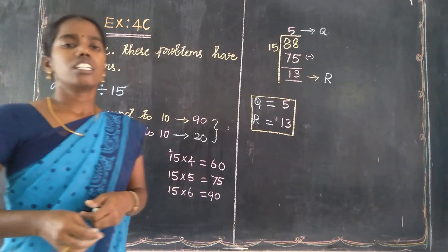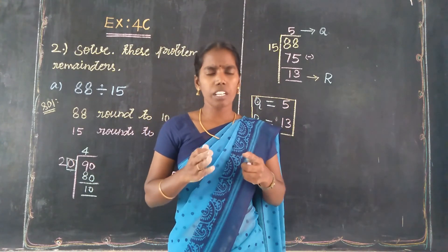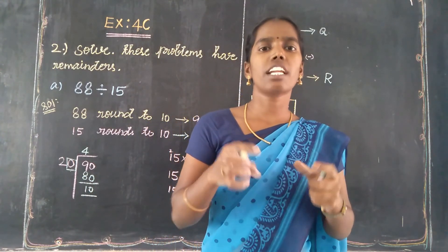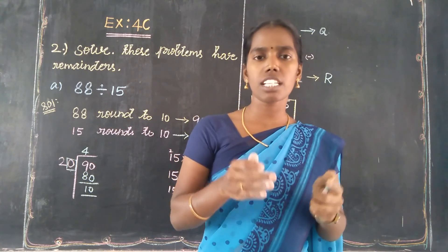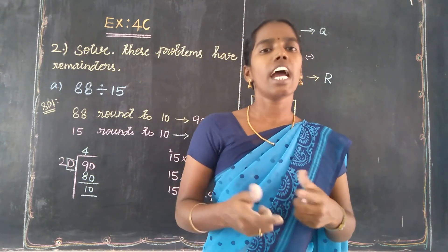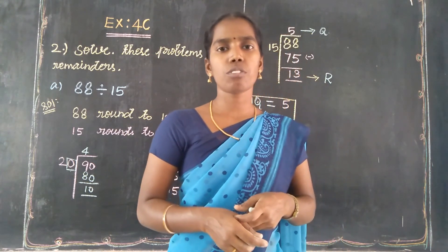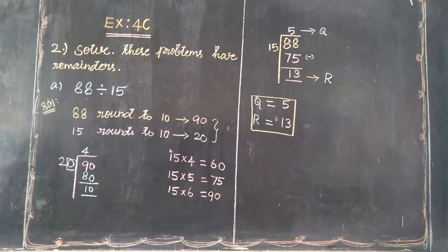Okay? Listen students. Using this normal division method, in this problem there is a half remainder. The problem has a remainder — just follow this method and get the final answer. Okay students, thank you.